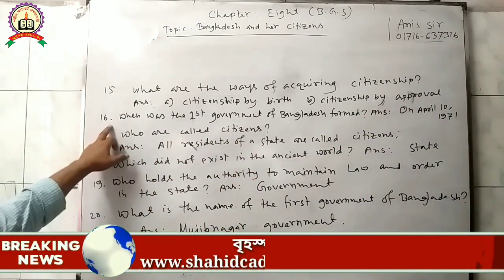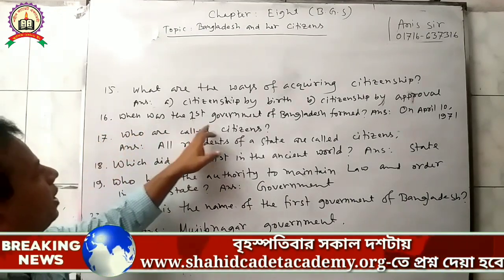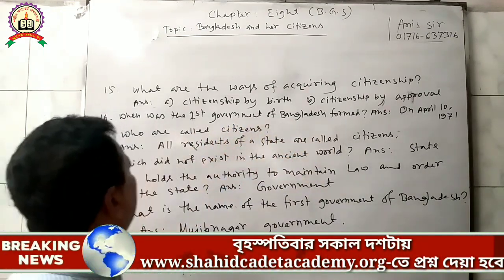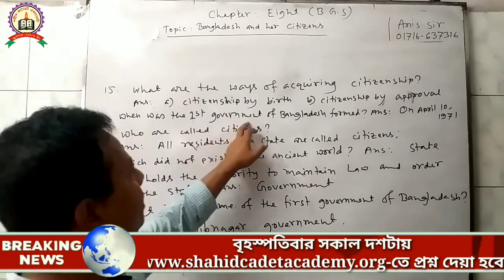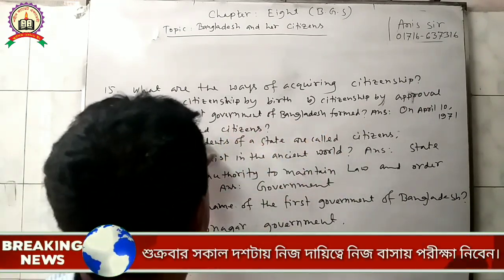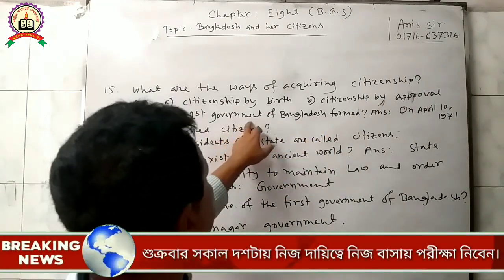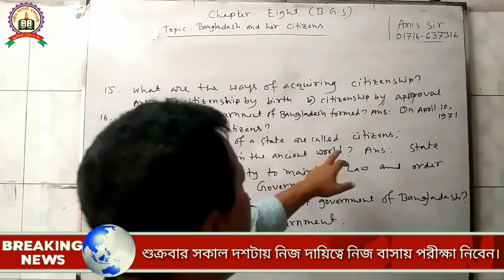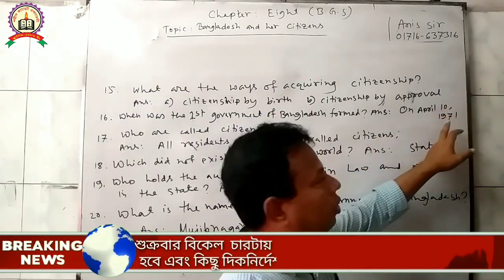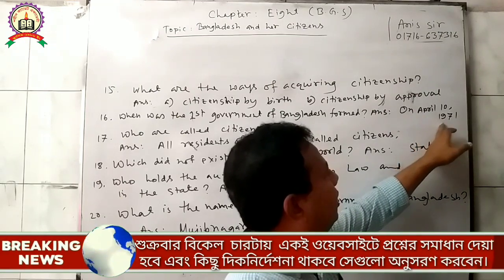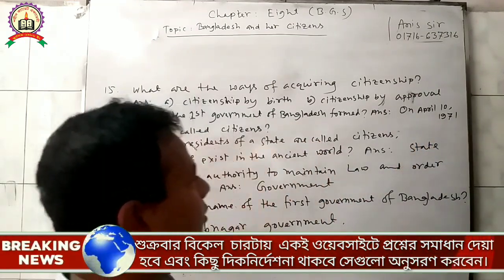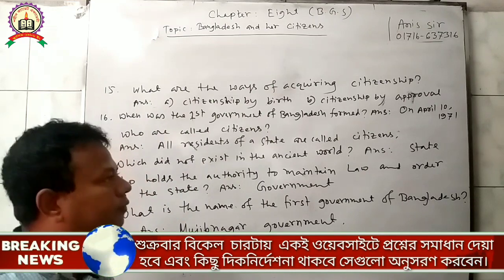Question 16: When was the first government of Bangladesh formed? Answer: The first government of Bangladesh was formed on April 10, 1971.